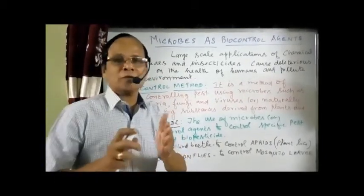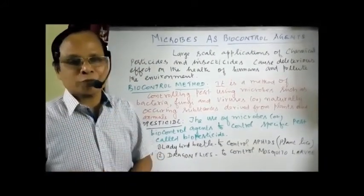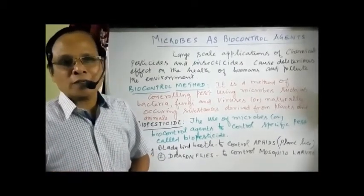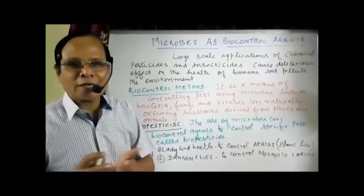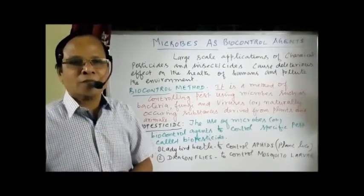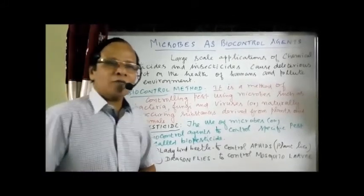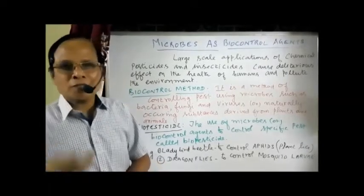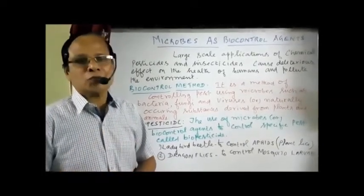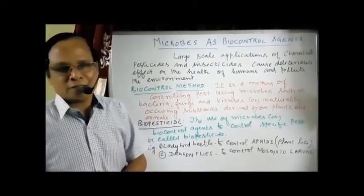What is biocontrol method? It is a method of controlling pests using microbes such as bacteria, fungi, or viruses, or naturally occurring substances derived from plants and animals. Such a method is called the biocontrol method. The microorganisms or agents used to control the pest are called biopesticides.